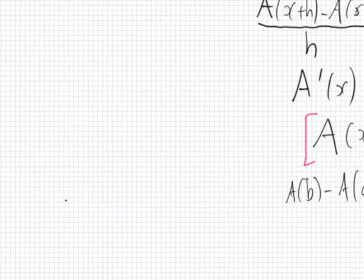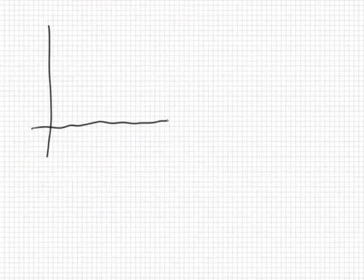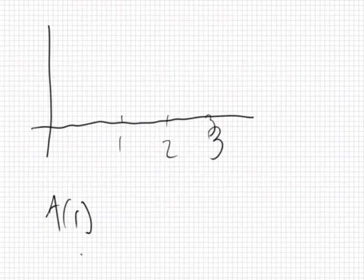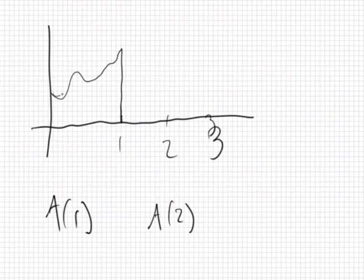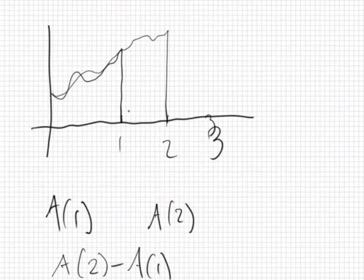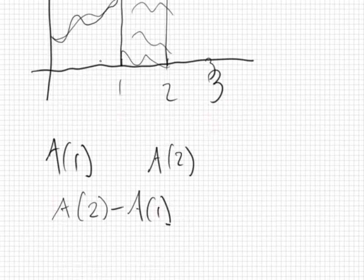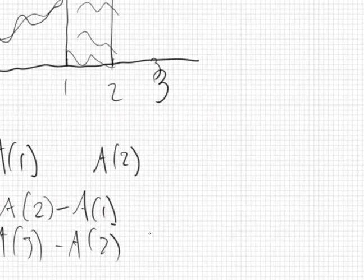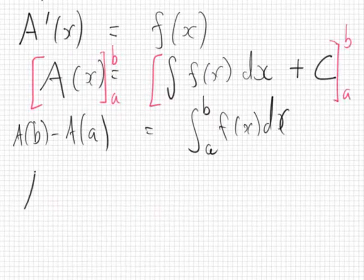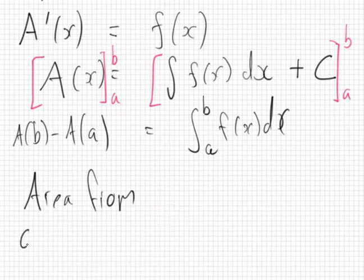On the left, A(b) minus A(a) represents the area on the graph. For example with numbers 1, 2, and 3: A(1) is the area from zero to one, A(2) is zero to two. Then A(2) minus A(1) is the area from one to two, and A(3) minus A(2) is the area from two to three. So we get the result: the area from a to b equals the integral from a to b of f(x) dx.